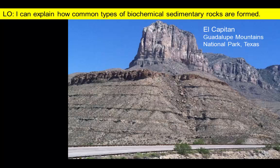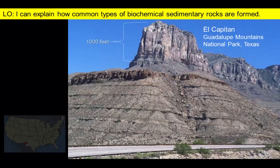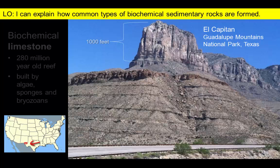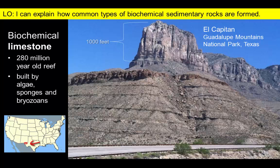For example, the limestone cliffs of El Capitan in West Texas were originally formed 280 million years ago as a combination of algae, sponges, and bryozoans precipitated limestone out of the shallow seawater to build up a reef.